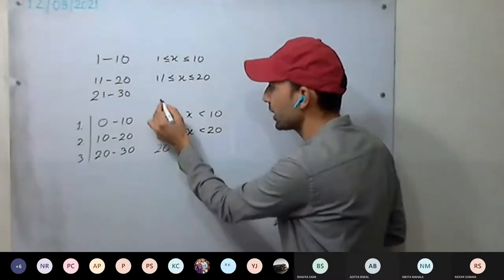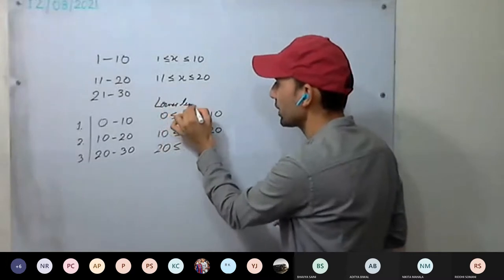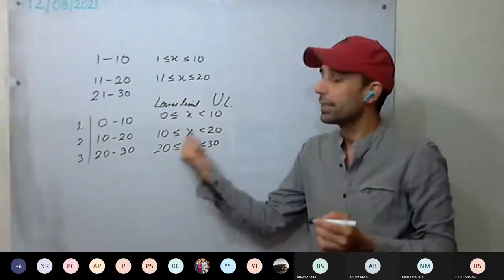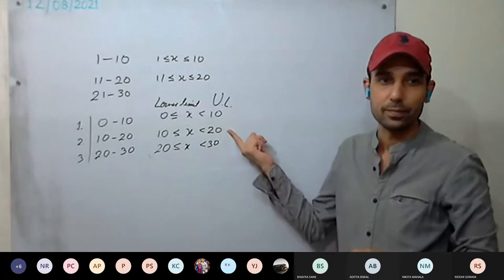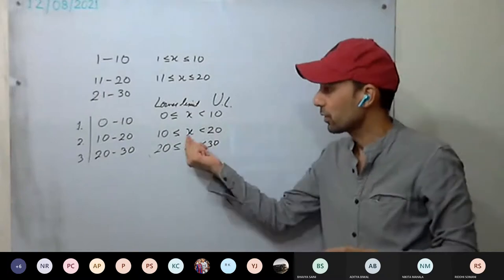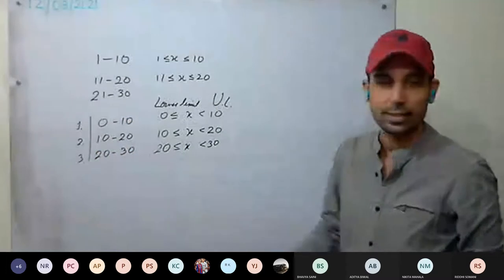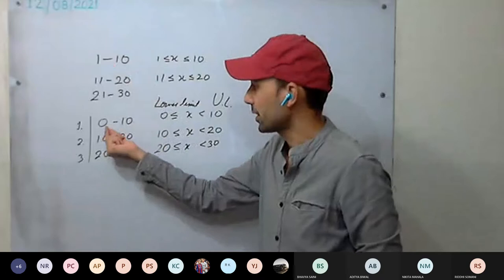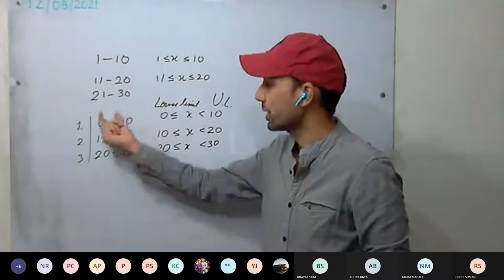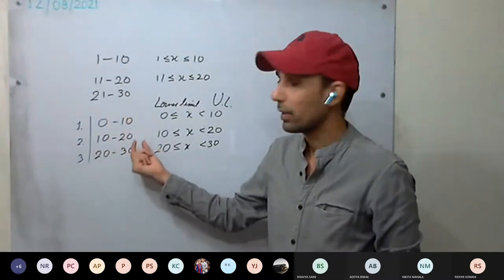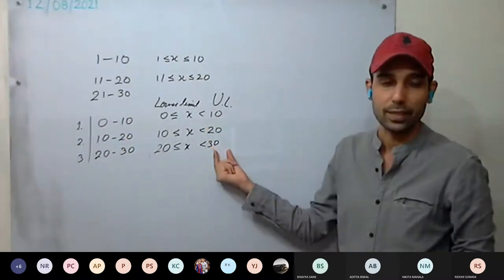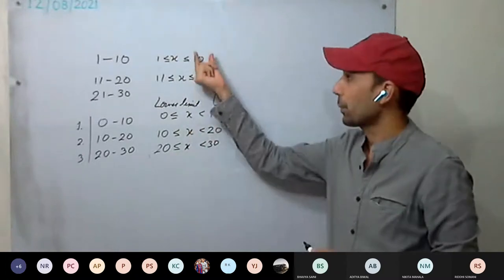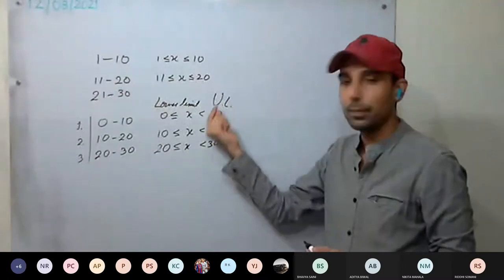But here what we do is we exclude the upper limit. Lower limits are included, upper limits are excluded. Now where will 10 go? It will go to the second class because these are exclusive class intervals. In inclusive, lower limit and upper limit both are included. In exclusive form — 0 to 10, 10 to 20, 20 to 30 — upper limits are excluded.